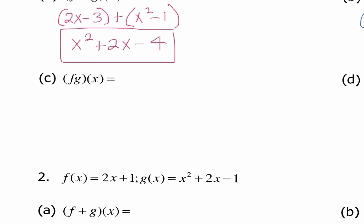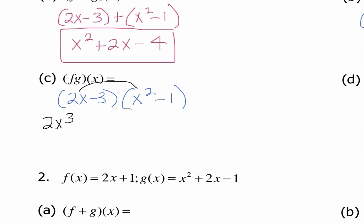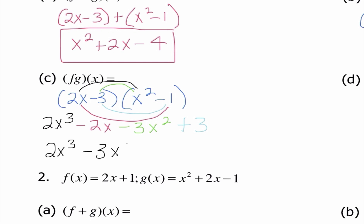Part c is telling us to multiply. So I'm going to do 2x minus 3 times x squared minus 1. I need to FOIL here. So 2x times x squared becomes 2x cubed. Outside, 2x times negative 1 is negative 2x. Inside gives me negative 3x squared. And then negative 3 times negative 1 gives me 3. Writing in descending order: 2x cubed minus 3x squared minus 2x plus 3.